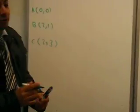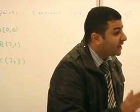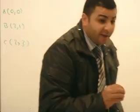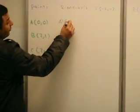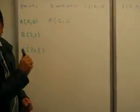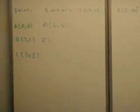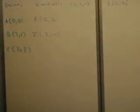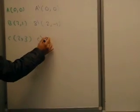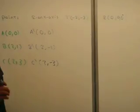Now we want to find the reflection on the X-axis. If we want to make reflection on the X-axis, we fix X and change the sign of Y. A dash equals zero and zero — because we didn't change zero. B dash equals two and negative one — because we fixed X and changed Y. C dash equals two and negative three. This is the first item: reflection on X-axis.